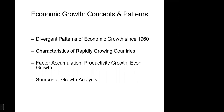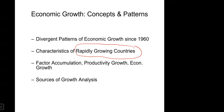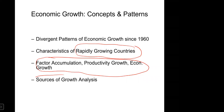We will have four topics in this chapter. Number one, we are going to look at divergent patterns of economic growth since 1960. Then we look at characteristics of rapidly growing countries to understand what is behind their successful story. We are also going to look at a simple growth accounting — first examining factor accumulation through a simple production function, then doing accounting analysis to understand the sources of growth.